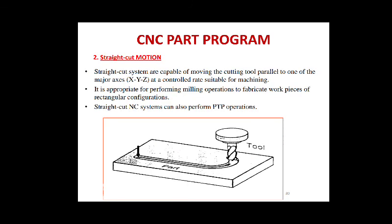The second motion type is straight cut motion. Straight cut systems are capable of moving the cutting tool parallel to one of the major axes at a controlled rate suitable for machining. It is appropriate for performing milling operations to fabricate work pieces of rectangular configurations. Straight cut systems can also perform point-to-point operations. The example here is milling operations, where the cutting tool moves parallel to one of the X, Y, or Z axes at a controlled rate.